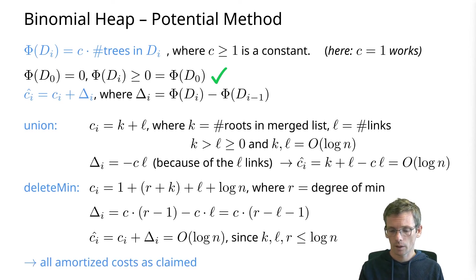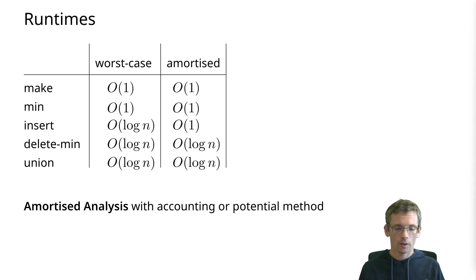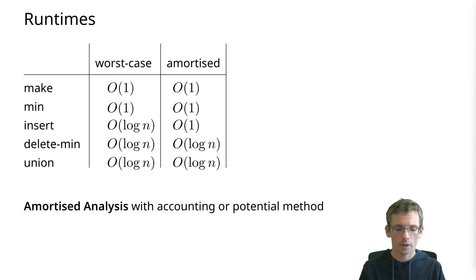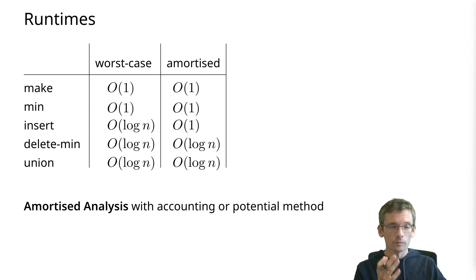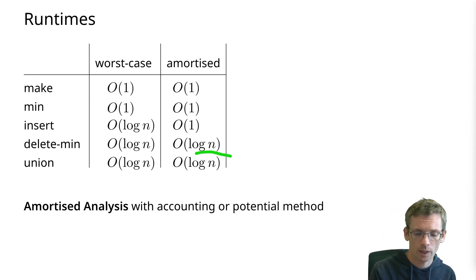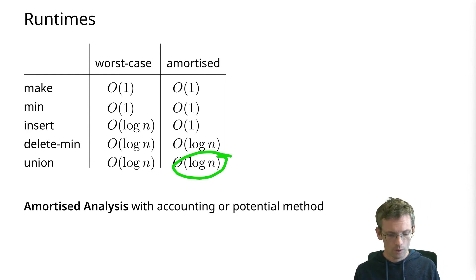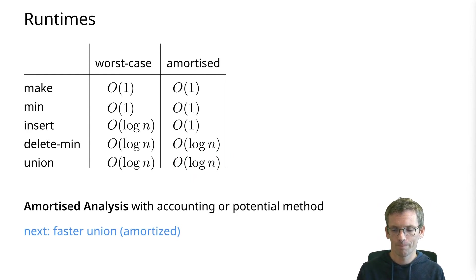We can conclude: we indeed get an amortized running time for insert of O(1), while other operations stay as before. In the next video, we are going to look at how to also achieve O(1) for the union.